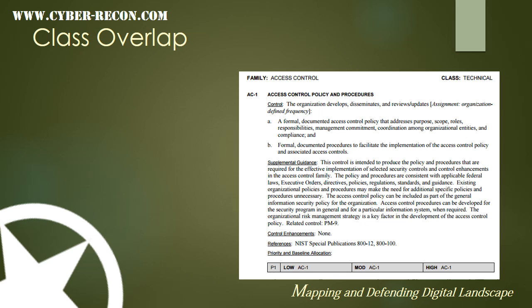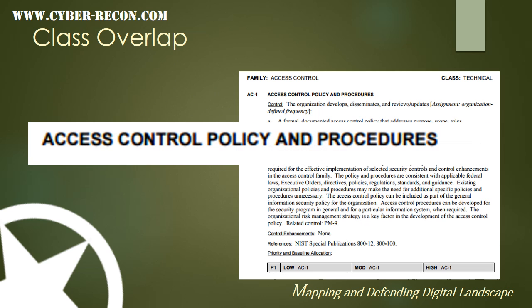NIST began to realize that classifying these families by these broad categories often led to class overlap. For example, AC or access control is a technical class family, but some of the controls within the technical class are operational or managerial. For example, AC talks primarily about policy and procedure, which is not a technical type control.